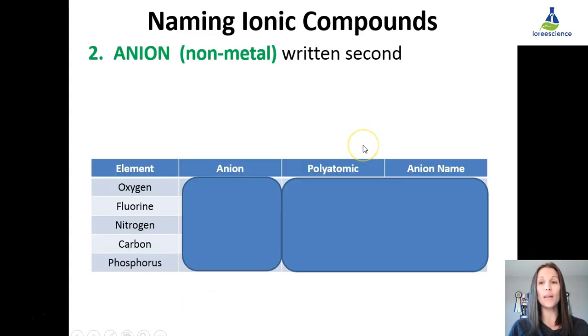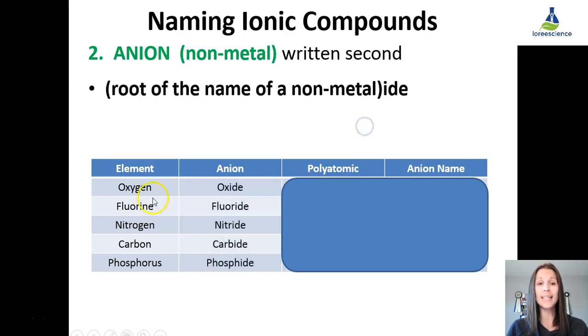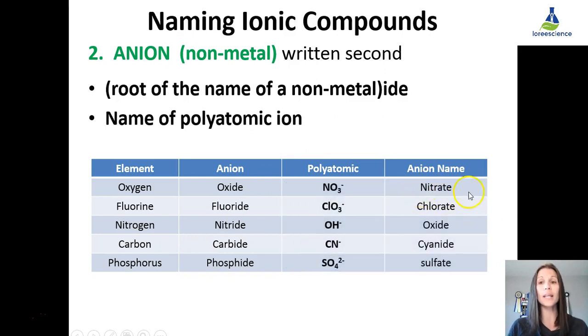The second part of naming the ionic compound is the anion, or the non-metal, written second. You take the root name of that non-metal, and add the word IDE. Oxygen would become oxide. Fluorine, fluoride. Carbon becomes carbide. If it's a polyatomic that's occurring second, you just write the name of the polyatomic ion, nitrate, chlorate, oxide, cyanide.